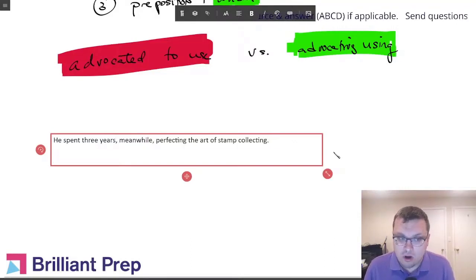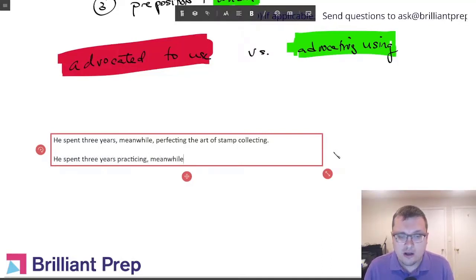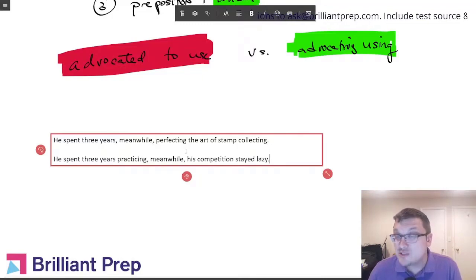Here would be a case where it's wrong: He spent three years practicing, meanwhile, his competition stayed lazy. So this would be wrong, not because of the meanwhile—I mean that's sort of a side effect—it's because you have a complete sentence and a complete sentence.